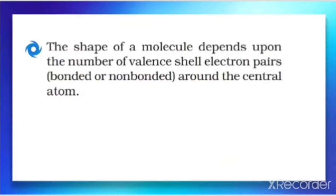The first postulate: the shape of a molecule depends upon the number of valence shell electron pairs around the central atom. That is most important here. According to this theory, the shape depends upon the electron pairs — bonded or non-bonded — around the central atom. The number of valence shell electron pairs of the central atom is what matters.